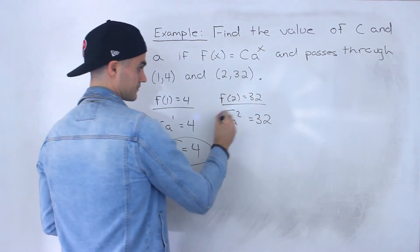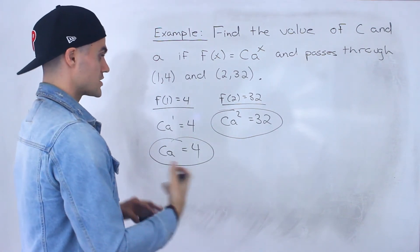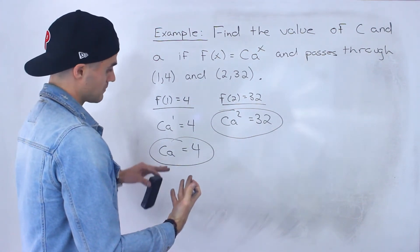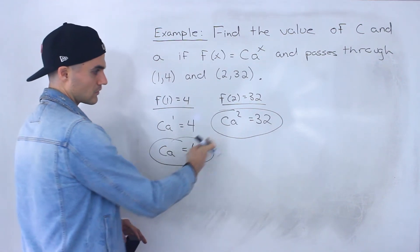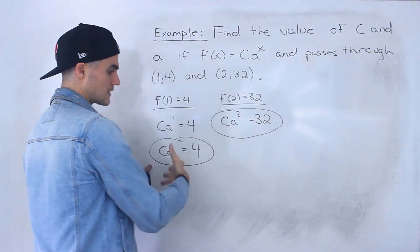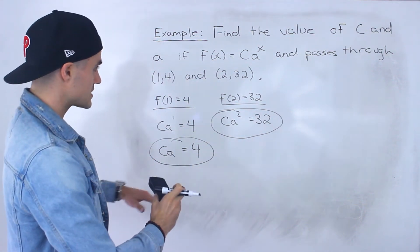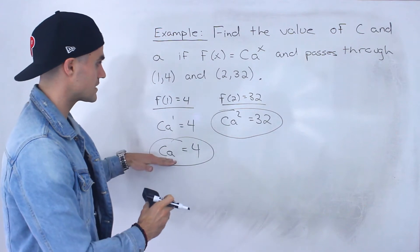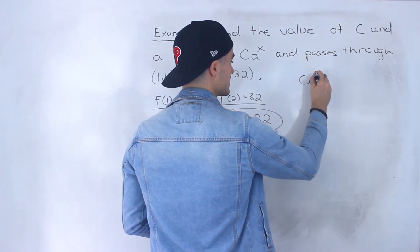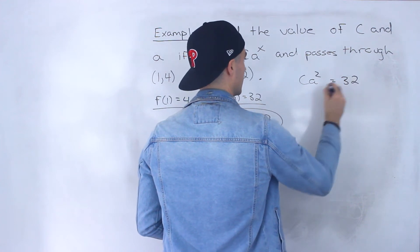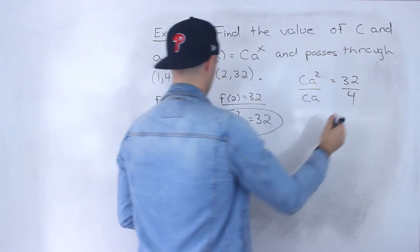And so notice, we got two equations now and two unknowns. So different ways we could solve this, we can maybe isolate for a or c here. Or we can maybe even isolate for this c and then plug it in here. What I'm actually going to do is something a little different. What I notice is that we have this c here and a c here. So what I can do is I can actually take this and divide it by this.